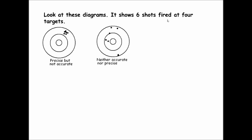In the second target, the shots are neither precise nor accurate. They're not accurate because they're nowhere near the bullseye — they're scattered all over. And they're not precise because they're not near each other. Measurements that don't come close to the accepted value and aren't near each other are neither precise nor accurate, just like these shots.